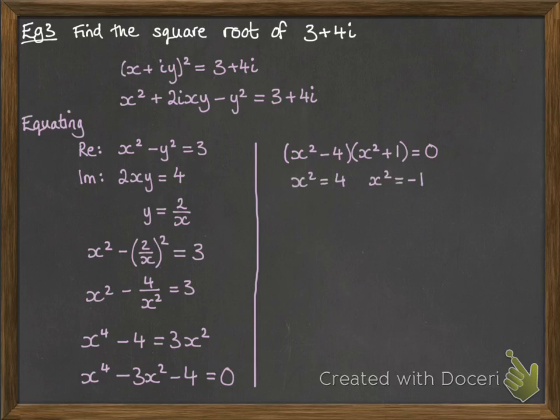So, x squared is equal to 4 or x squared equals minus 1. Now, at this point, x squared equals minus 1, that's not a valid solution. x has to be a real number, remember? So, since it's the real part of our complex number, and the same if it was y as well, both x and y have to be real numbers themselves. It's when they get put with an i that makes them complex or imaginary. So, this x squared equals minus 1 is not okay.